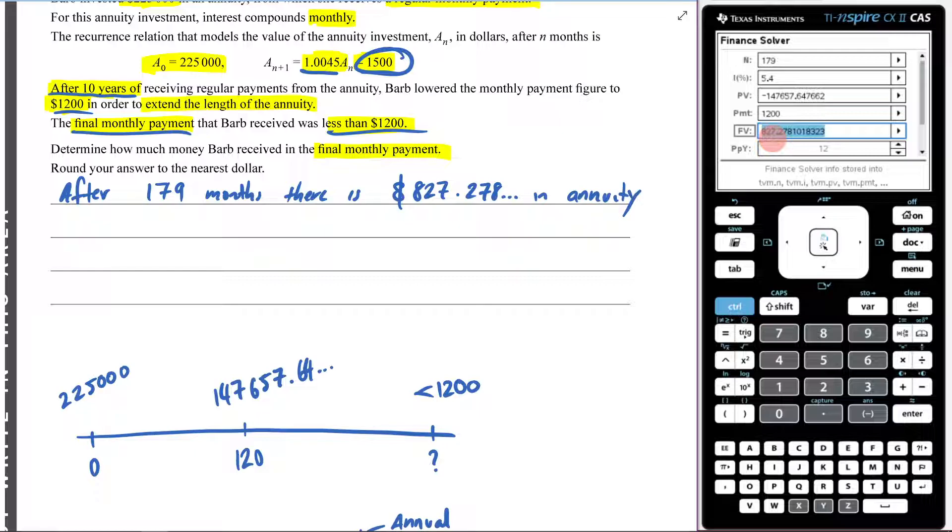Now that isn't my final answer because see how it says, determine how much money Barb will receive in the final monthly payment. In the final monthly payment, how much money will she receive?